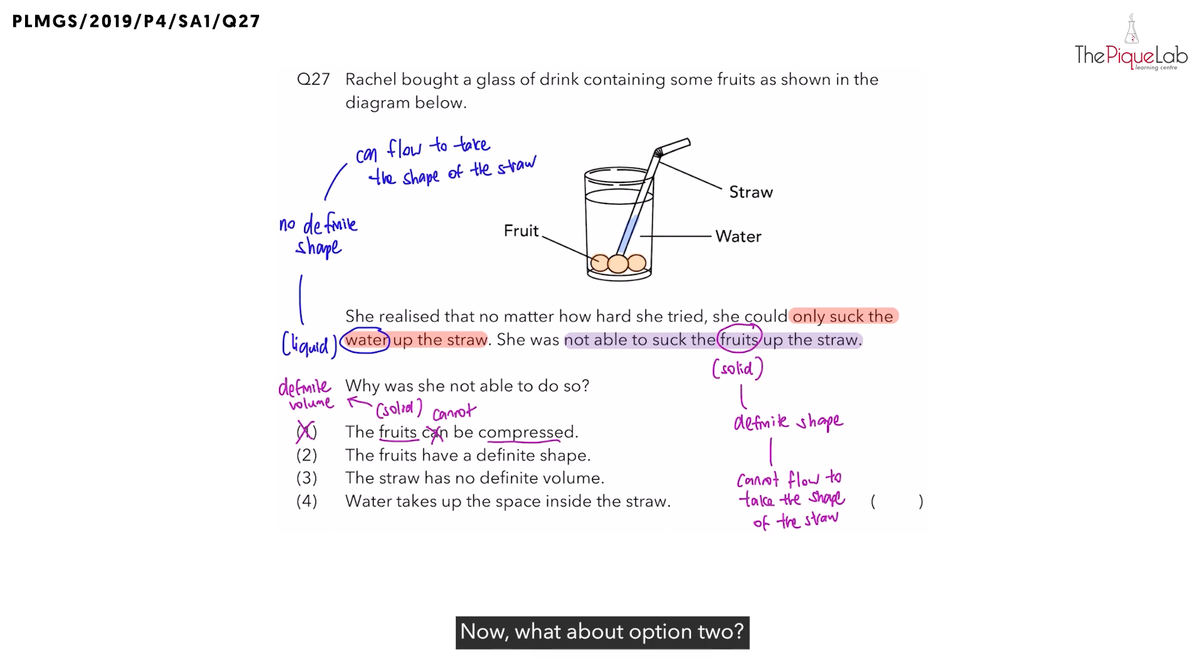Now, what about option two? They said that the fruits have a definite shape. Is that true? Yes. We actually wrote that out earlier. So, option two is definitely correct. But let's check the rest of the options.